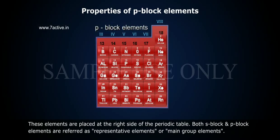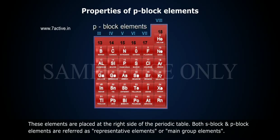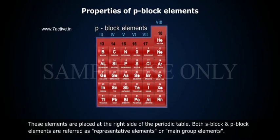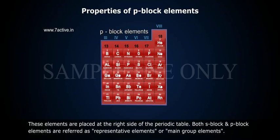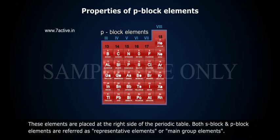These elements are placed at the right side of the periodic table. Both S-Block and P-Block Elements are referred to as representative elements or main group elements.